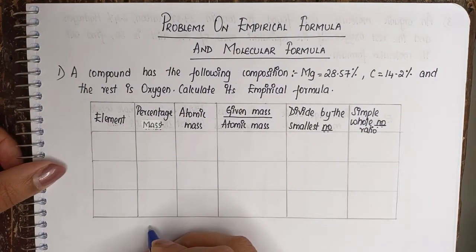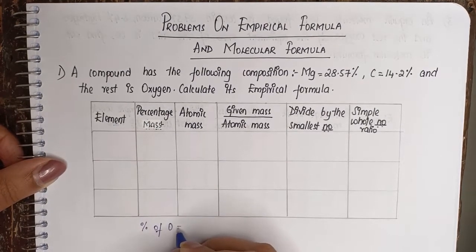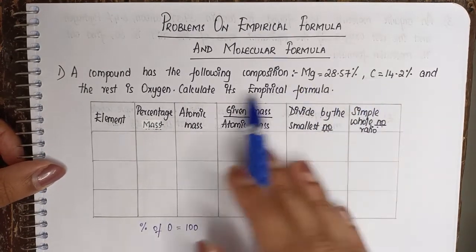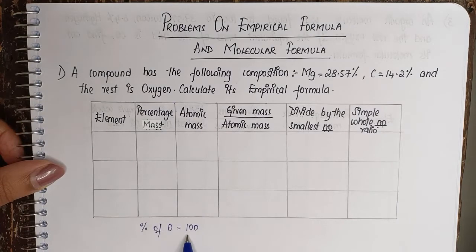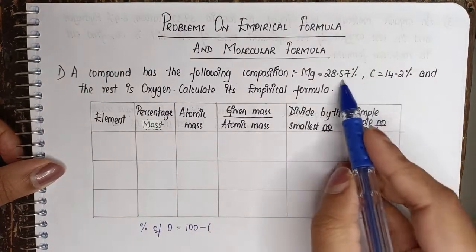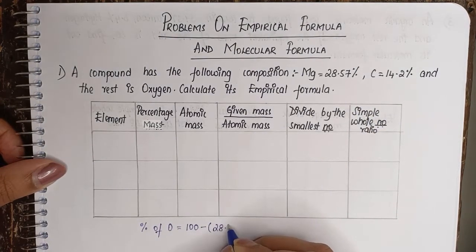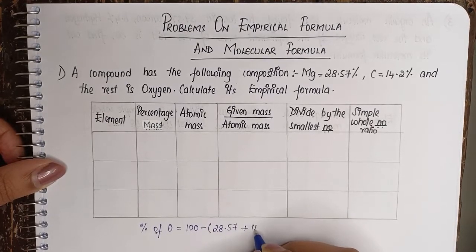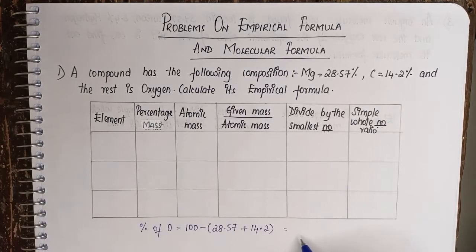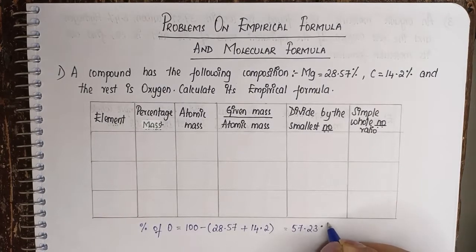So first let's calculate the percentage of oxygen. We will have percentage of oxygen equals 100, which is the total. If we add up magnesium, carbon, and oxygen, you have to get 100. So 100 minus the percentage of magnesium and carbon, which is 28.57 plus 14.2. When we simplify this, you will get for oxygen 57.23%.